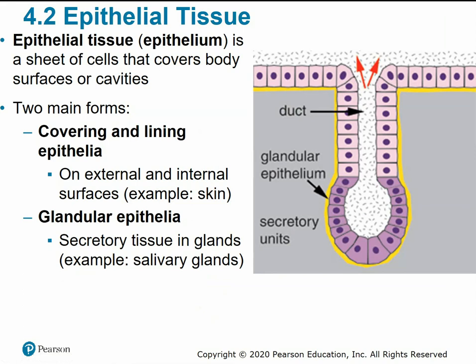Epithelial tissues are sheets of cells that cover the body's surfaces and cavities. There are two main types: covering and lining epithelial, found on external and internal surfaces like the skin, and glandular epithelia, which is secretory tissue in the glands, like your salivary glands in the mouth.